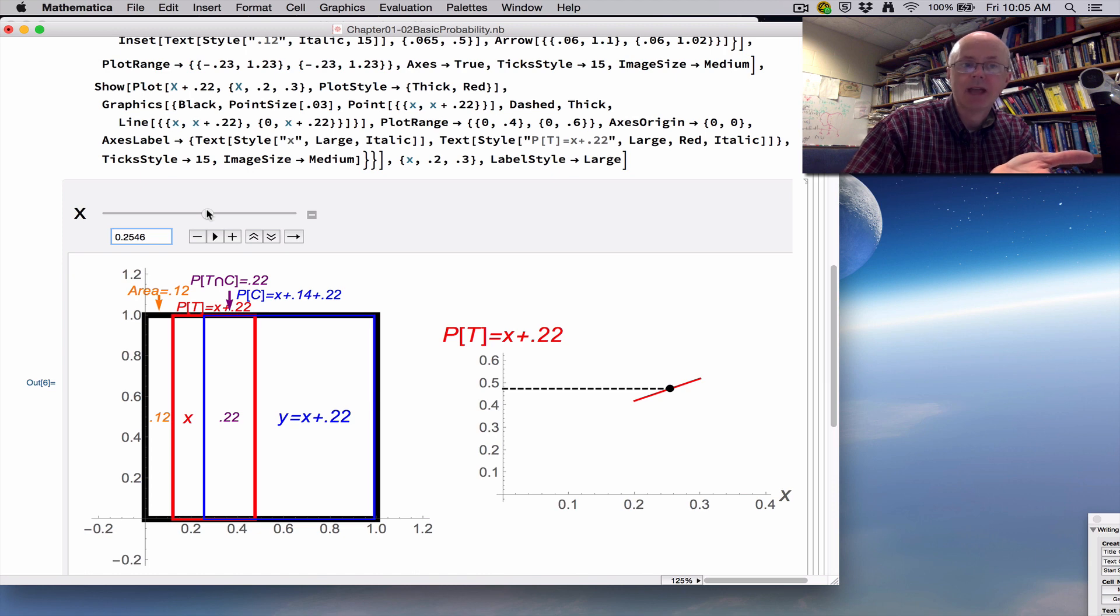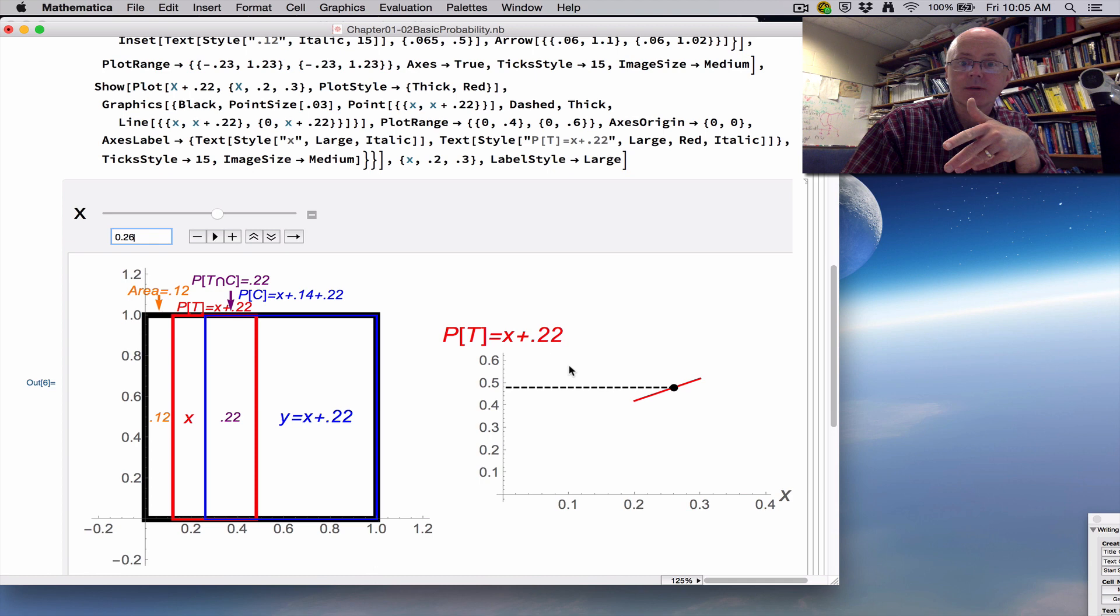I want the value of x where the right side of the blue rectangle is exactly on the right side of the black rectangle. That's the answer, 0.26. The graph shows where the answer is, x plus 0.22 as a function of x. When x is 0.26, this dashed line goes to y equals 0.48, the answer to the question. A cool way to conceptualize it. Thanks for watching.